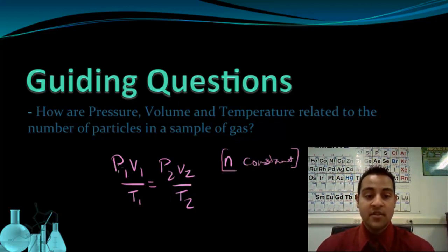So whatever the ratio is of pressure and volume to temperature, whatever that ratio is, it's dependent on the amount of a gas, or n, the moles of the gas.